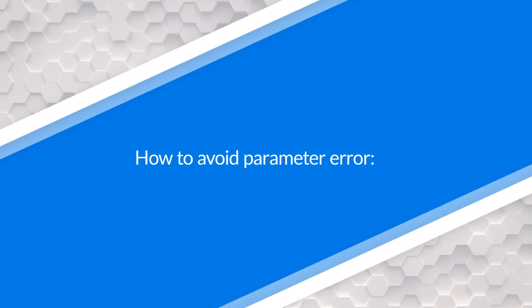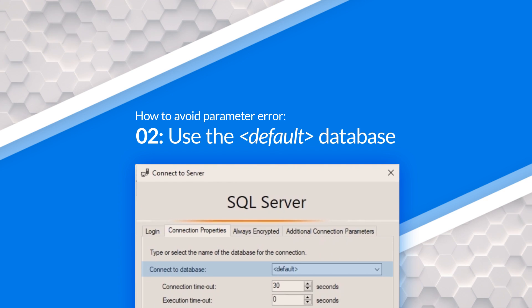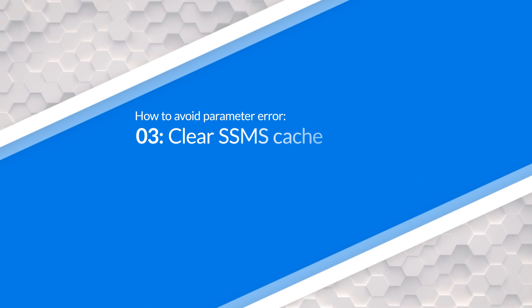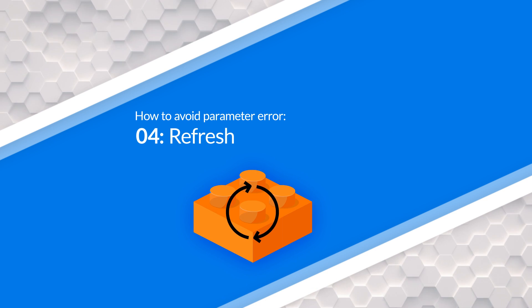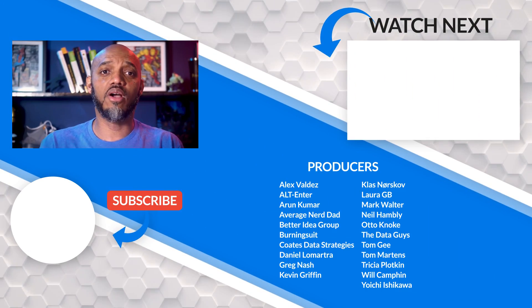The short version of this long story: make sure you don't use the initial catalog and make sure you have Default selected as the database. Then refresh. And make sure you've cleared out all those connections if you tried any of the other approaches, because SSMS will persist it — it'll hold it in cache.